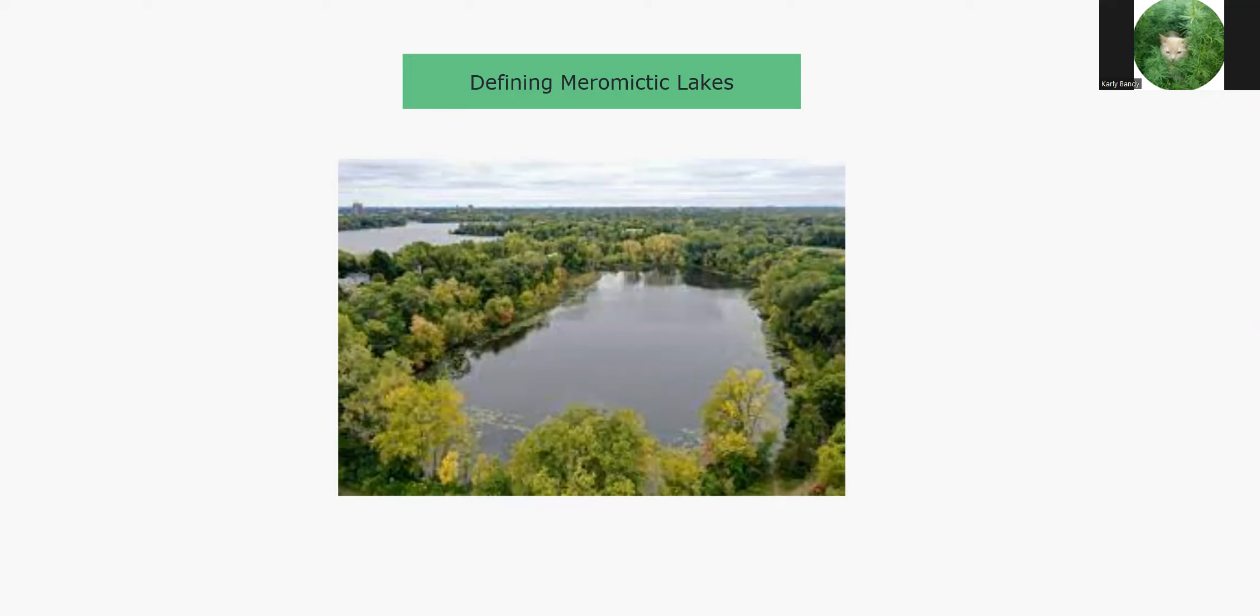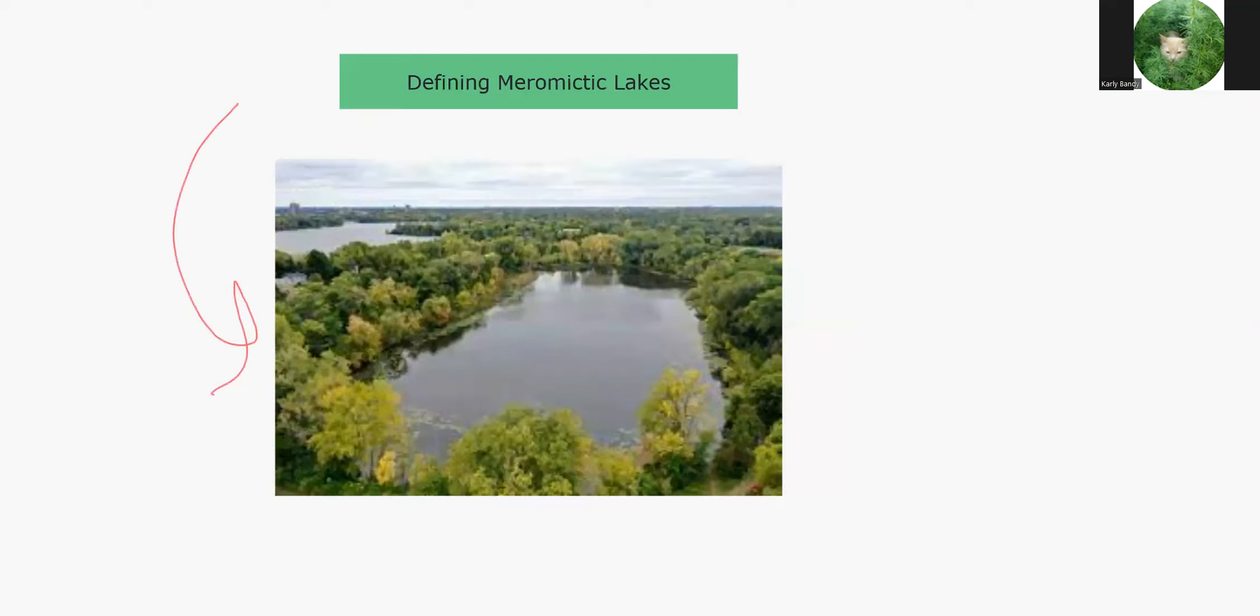So this is a prime example of a meromictic lake. This is Brownie Lake in Minnesota. It looks normal, but when looking at specific key parts, one can see the complexities, especially when looking at some cross sections.